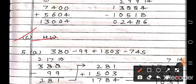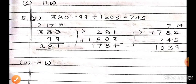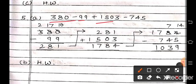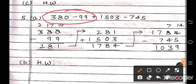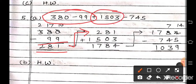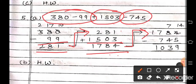Question number 4C you have to do in your homework. Now question number 5 — here are 4 numbers: 380 minus 99 plus 1,503 minus 745. First solve 380 minus 99 — answer is 281. Then write 281 here and add 1,503 — answer is 1,784. Now subtract 745 — take borrow — answer is 1,039.